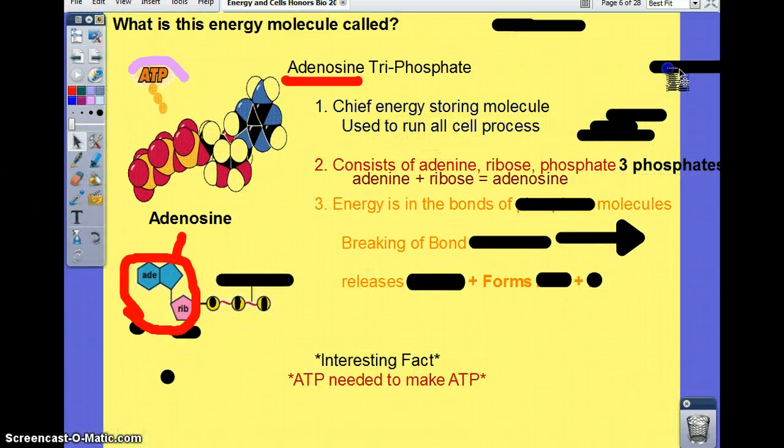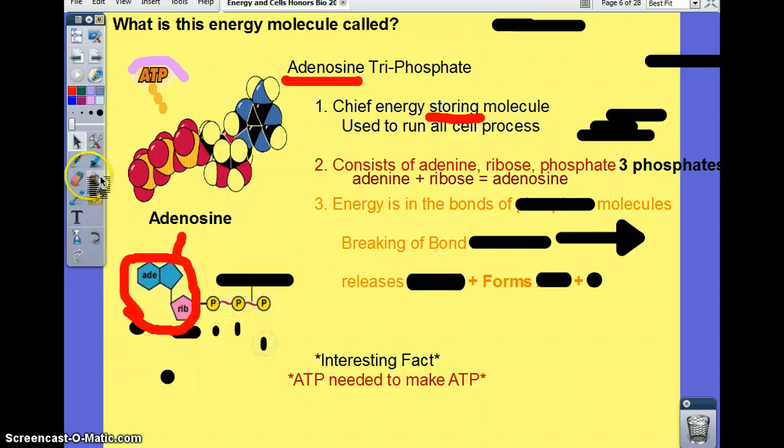And as I mentioned before, basically ATP, which is the chief energy storing—underline this word—molecule, used to run all cell functions. Why storing? Because inside these triphosphate bonds, which is right here, here's the bond. I'm going to point to it. There is a serious amount of stored energy inside the bonds.